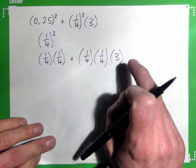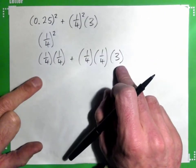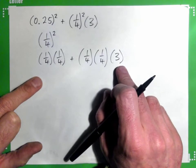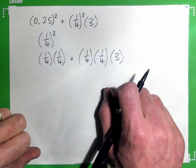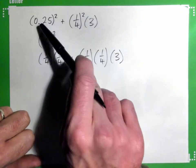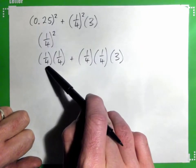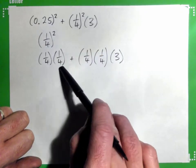Now, just from here to here, are there any questions to get from there to there? So, I wrote the 0.25 as a quarter, and a quarter squared is just a quarter times a quarter. Are we okay with that?